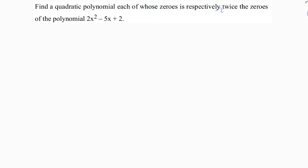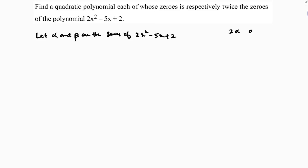Find a quadratic polynomial each of whose zeros is respectively twice the zeros of 2x squared minus 5x plus 2. I will consider alpha and beta as the zeros of 2x squared minus 5x plus 2. I need to find the polynomial whose zeros are 2 alpha and 2 beta, because they are twice those zeros.